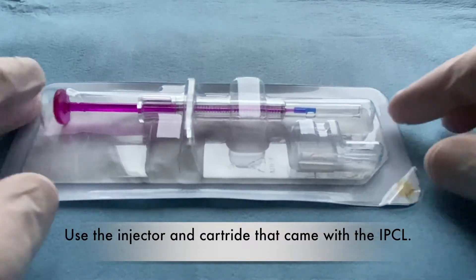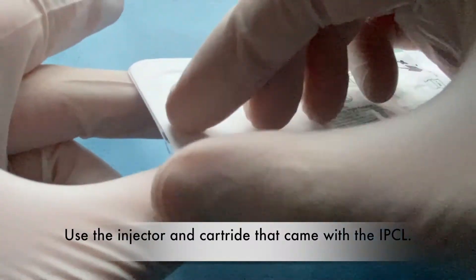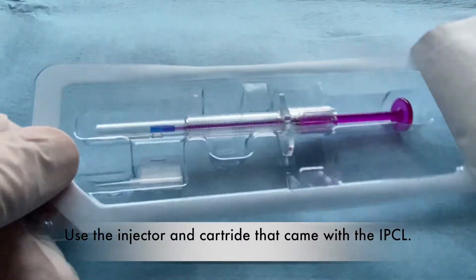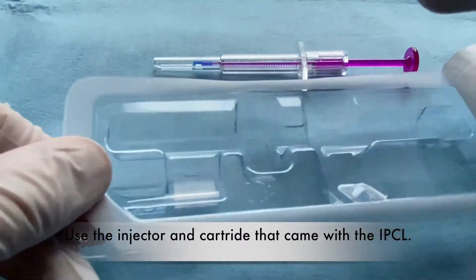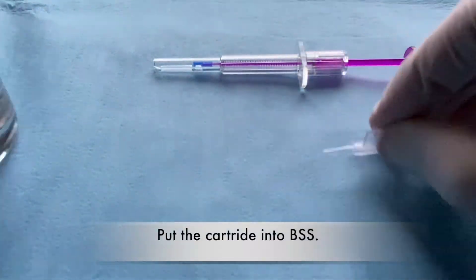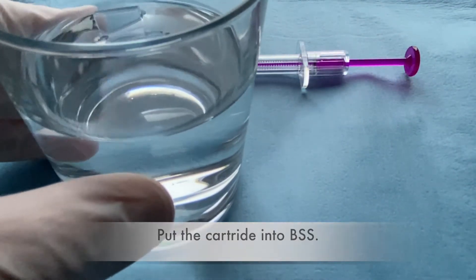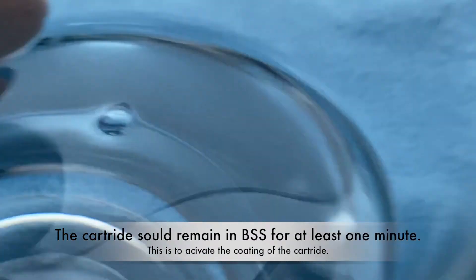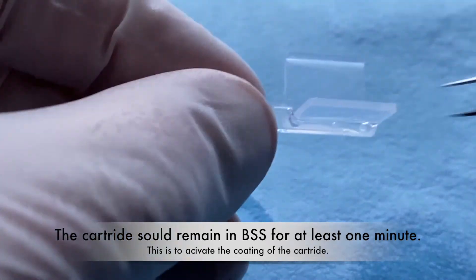Use the injector and the cartridge that came with the IPCL. Put the cartridge into BSS. The cartridge should remain in BSS for at least one minute. This is to activate the coating of the cartridge.